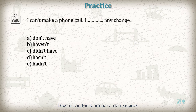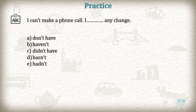Now let's have a trial test. You have to choose the right answer. I can't make a phone call — I _____ any change. A: don't have. B: haven't. C: didn't have. D: hasn't. E: hadn't. The answer is D. Thank you.